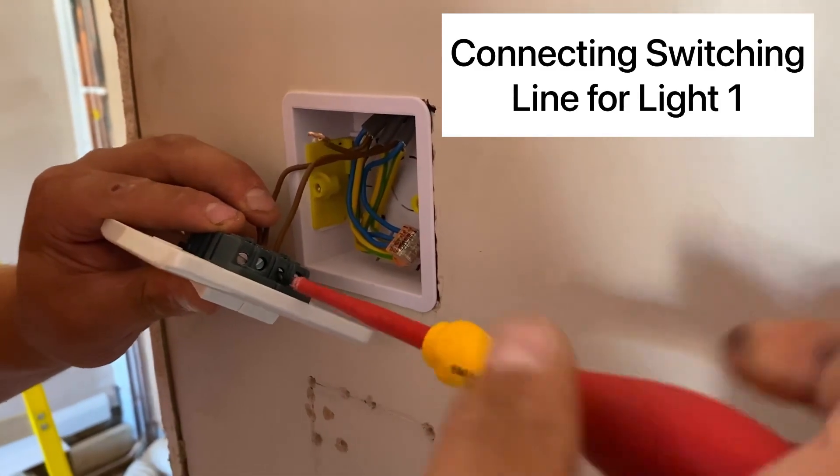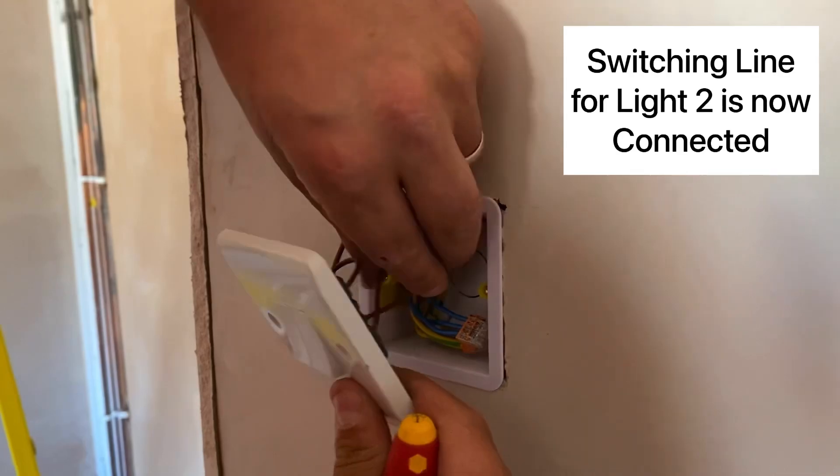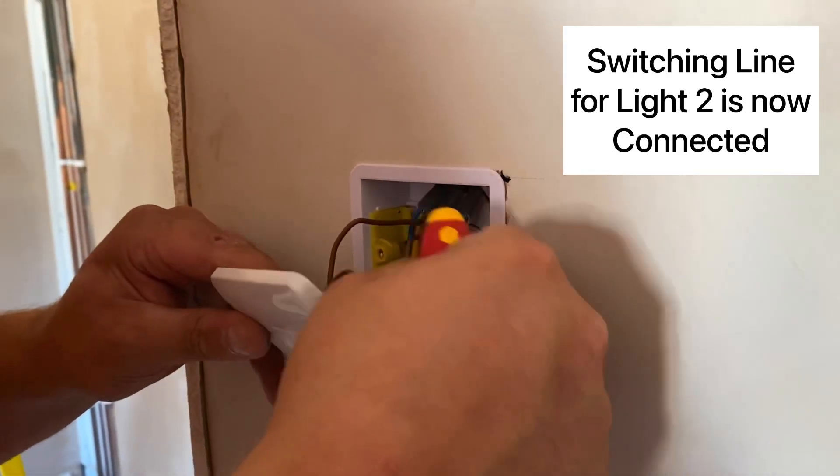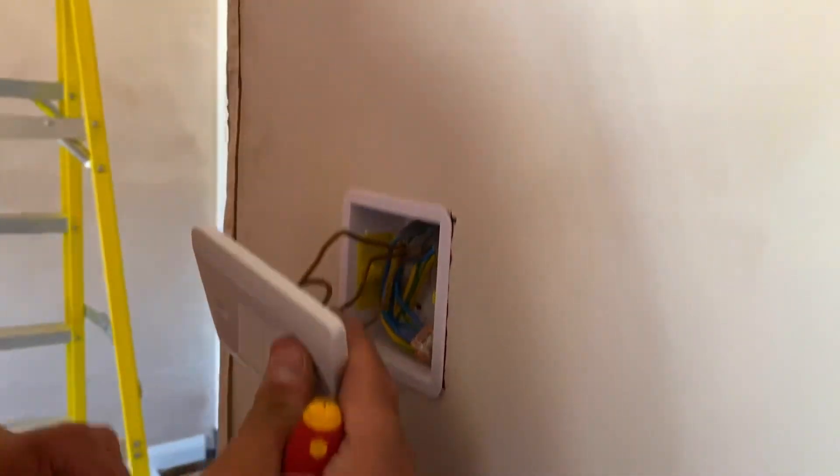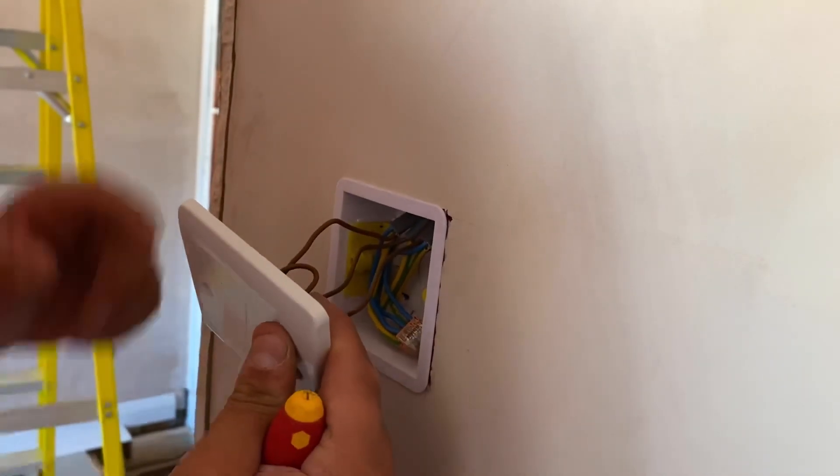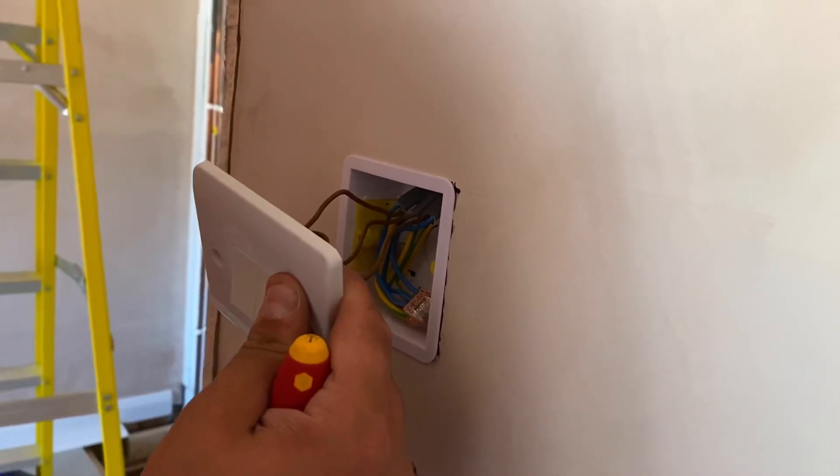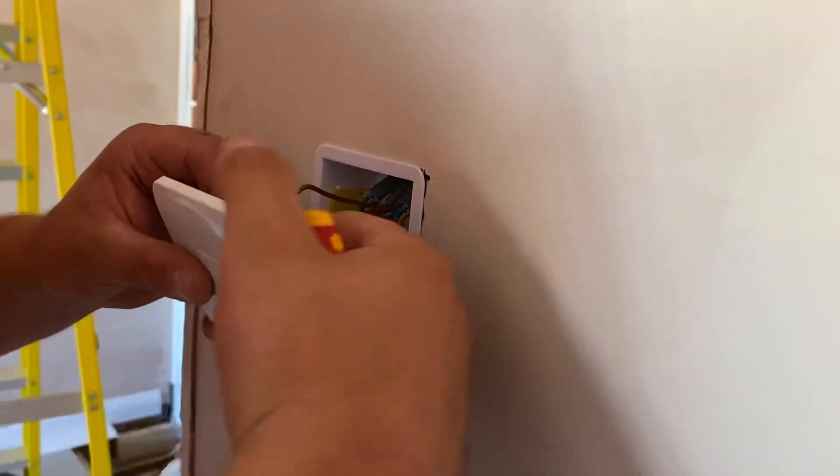Switching line, switching line, and then we have a permanent feed with our bridge connection across the two commons to give both sides a permanent feed. Now if you add a three gang switch again, you could bridge again and again and again until needed.